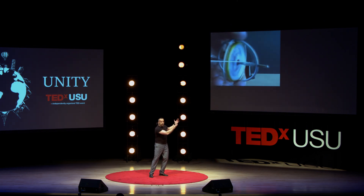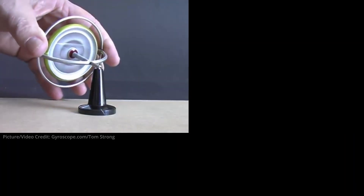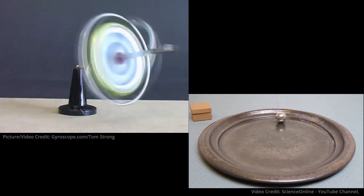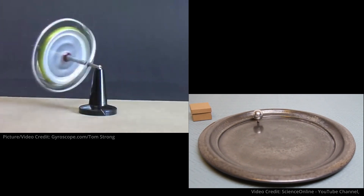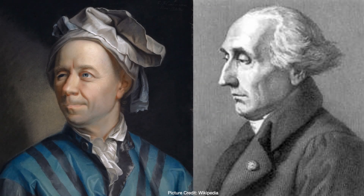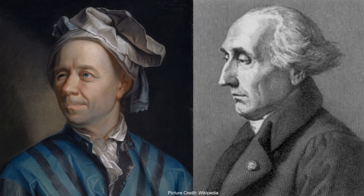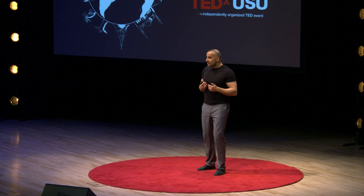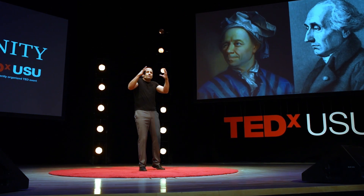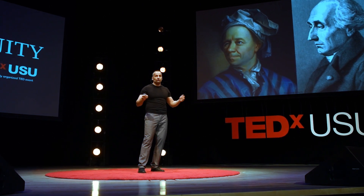Look at this — a spinning gyroscope seemingly defying our Earth's gravity. Or a so-called tippy top, effortlessly just flipping around. In the late 18th century, two mathematicians, Leonard Euler on the left and Joseph Louis Lagrange on the right, were able to solve the equations of motions that govern the movement of two kinds of spinning tops, which since then have been associated with their names. They are called the Euler top and the Lagrange top. However, the motion of a spinning rotating body of just arbitrary size and shape is non-integrable, meaning chaotic.